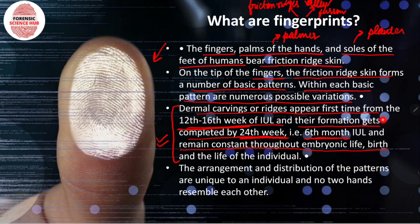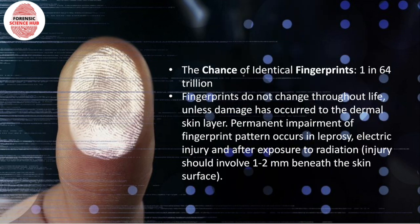Fingerprints do not change after birth and remain the same through the entire life of the individual. The arrangement and distribution of patterns are unique to every individual and no two hands resemble each other. The chances of two people having the same fingerprint are one in 64 million, showing how rare or virtually impossible it is to find two people with the same fingerprints.